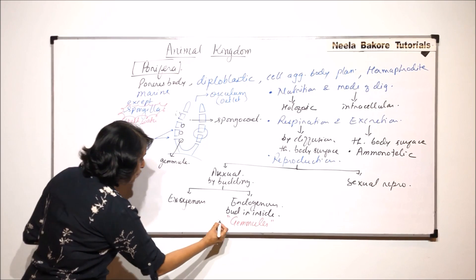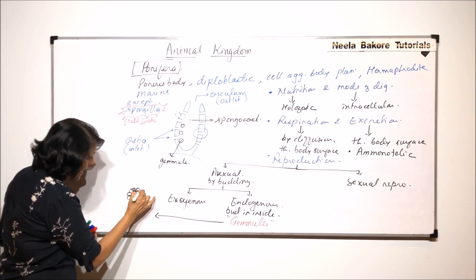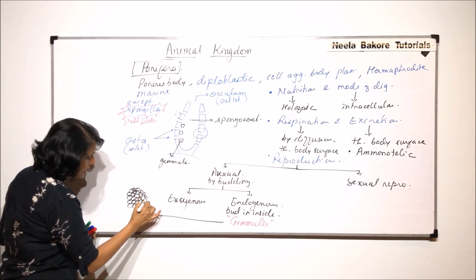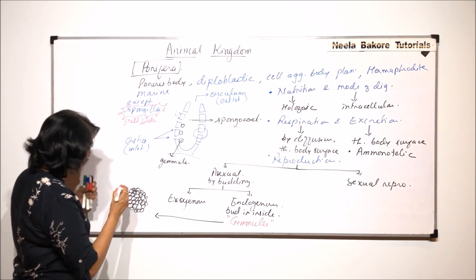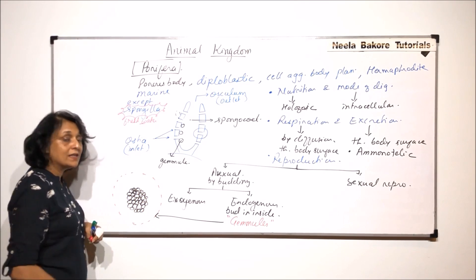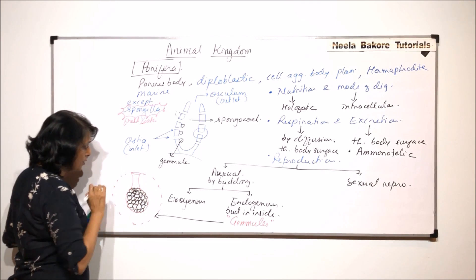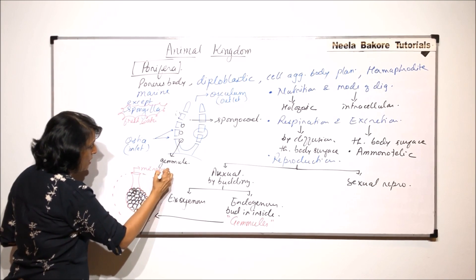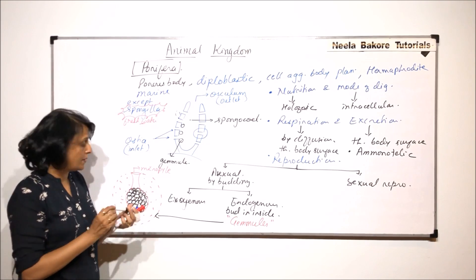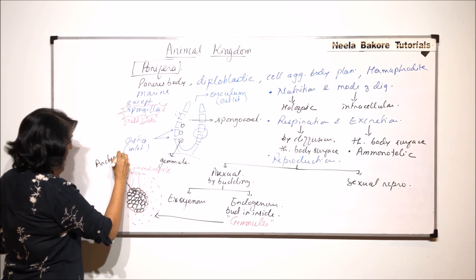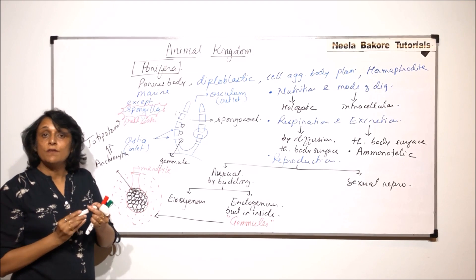The gemule has a collection of cells known as archaeocytes, and these archaeocytes are totipotent cells. Totipotent means each cell has the capacity to give rise to a complete organism. This mass of cells is surrounded by a gelatinous material, held within a membrane, and there is an opening called the micropyle.